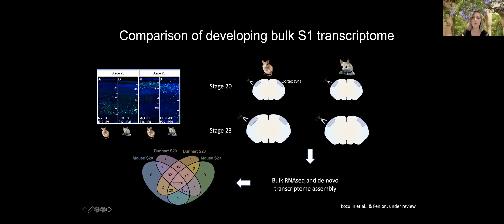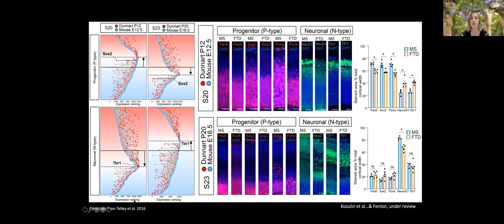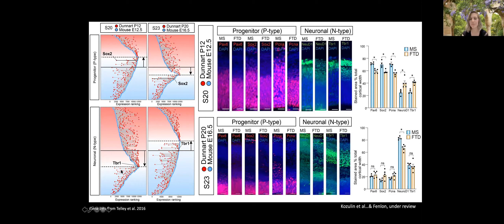We performed a de novo transcriptome assembly for the dunnart because the genome wasn't yet available, and identified over 12,000 orthologous genes comparable between species in a ranked manner. We then compared rankings against known gene lists relevant to developing cortical neuron identities. Using a gene list from Telley et al. 2016, which provided unique gene lists for progenitor-type and neuronal-type developing cortical neurons, we found an interesting pattern at our two developmental stages.